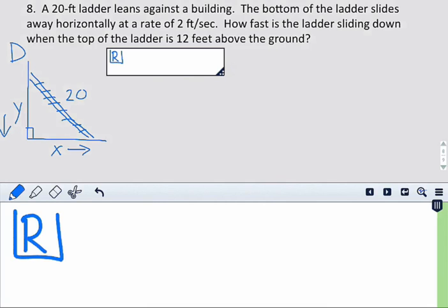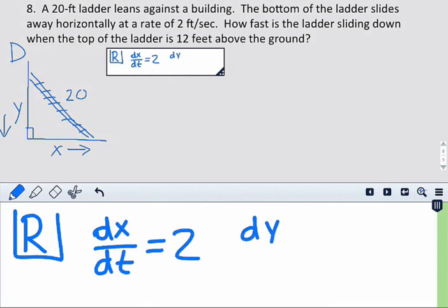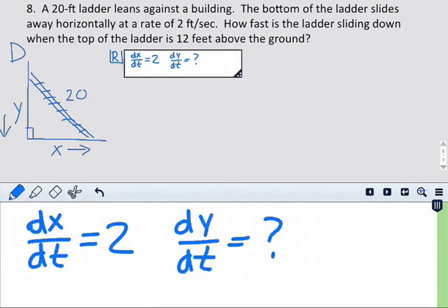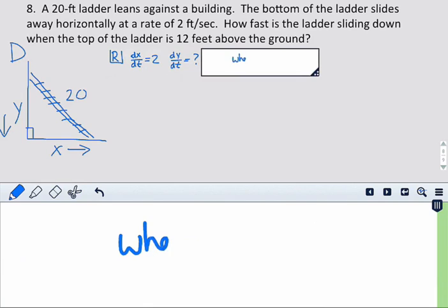So next, our rates. The bottom of the ladder slides away horizontally at a rate of 2 feet per second. So that's going to be dx/dt, and that's going to be 2. And we want to be able to find dy/dt, or how fast is it sliding down the wall, and we want to do this when it's 12 feet above the ground. So in this case, when Y equals 12.